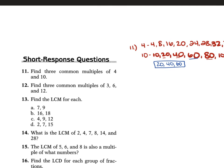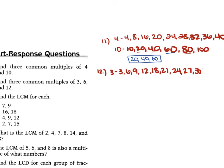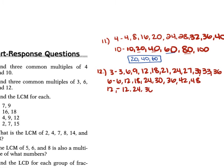For problem 12, we find three common multiples of 3, 6, and 12. Multiples of 3: 3, 6, 9, 12, 18, 21, 24, 27, 30, 33, 36. Multiples of 6: 6, 12, 18, 24, 30, 36, 42, 48. Multiples of 12: 12, 24, 36, 48. So our three common multiples are 12, 24, and 36.